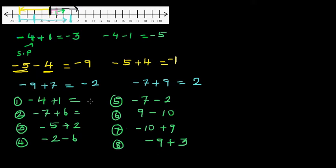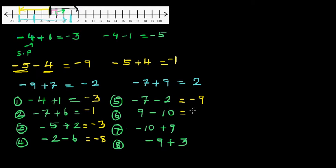Hopefully you have done the answers. I will write the answers so you can mark yourself: negative four plus one is negative three; negative one; negative three; negative eight; negative nine. Starting at nine and going ten steps to the left gives negative one. Nine take away ten and negative ten plus nine are basically the same, giving negative one. And this one is negative six.